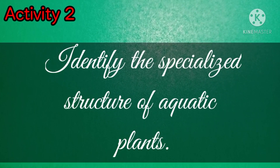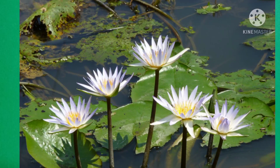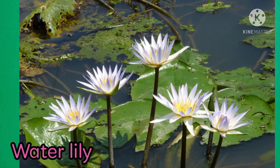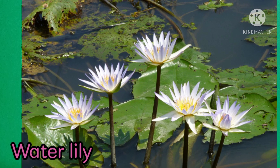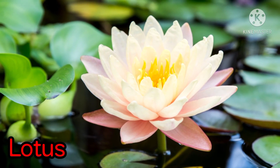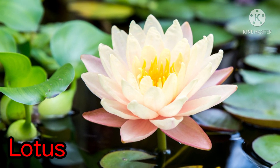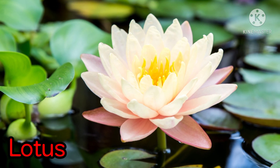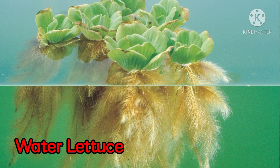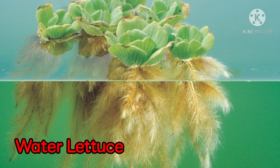Activity 2: Identify the specialized structures of aquatic plants. The leaves of water lily are wide, thick, and buoyant — these structures help them float in water. Lotus plants float in water because of their flat and broad leaves. Tiny hairs on the roots and leaves enable the water lettuce to float, making sure that it does not sink in its watery environment.